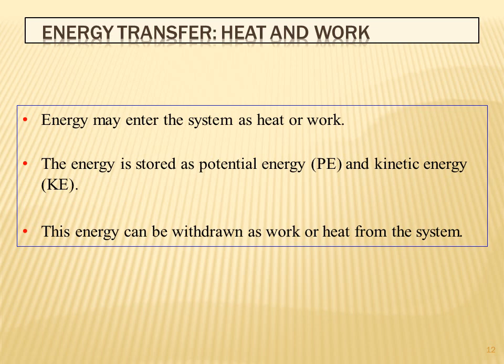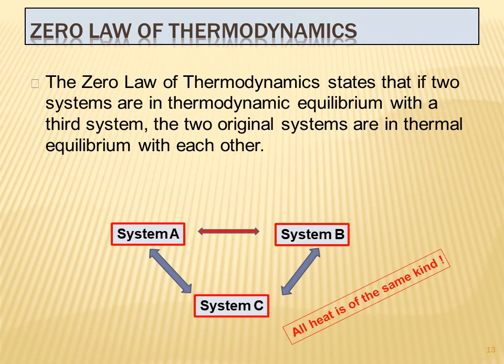The zeroth law of thermodynamics states that if two systems are in thermodynamic equilibrium with a third system, then the two original systems are in thermal equilibrium with each other. If A and B are each at equilibrium with C, they are also at equilibrium with each other. All heat is of the same kind.